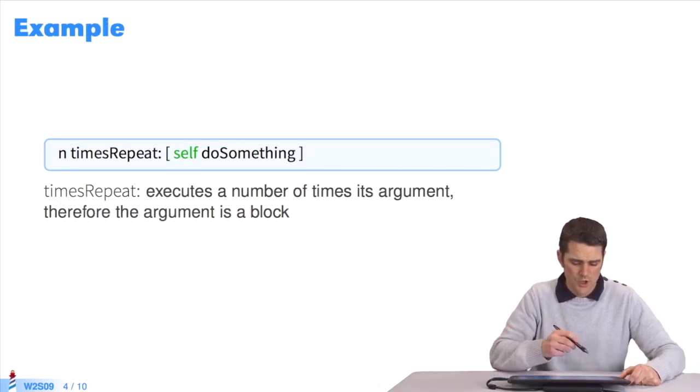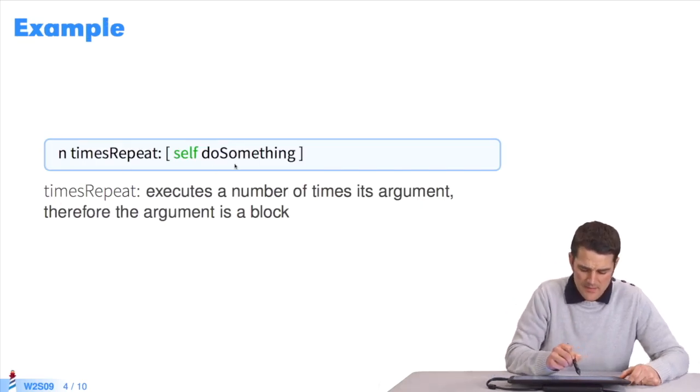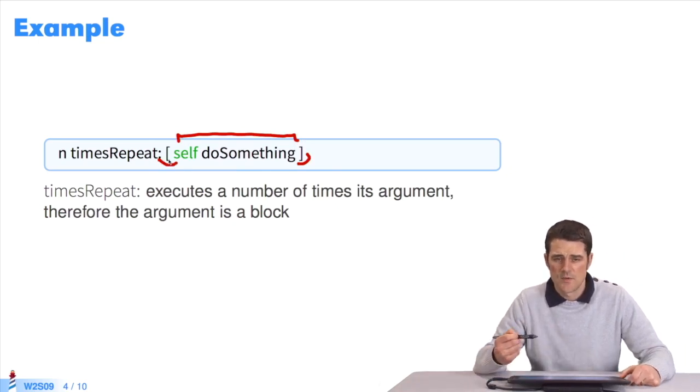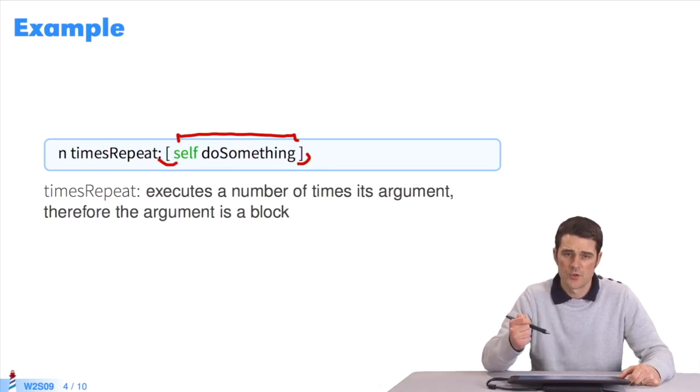For instance, n times repeat, self do something. Self do something is encapsulated in a block. Why? Because you must execute its expressions several times. You must put them in a block to send it the message value several times.